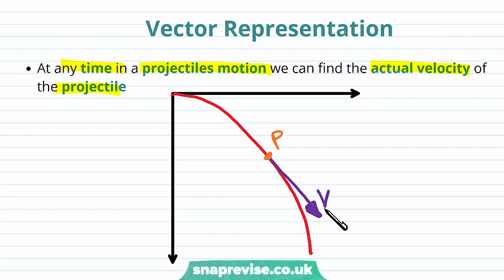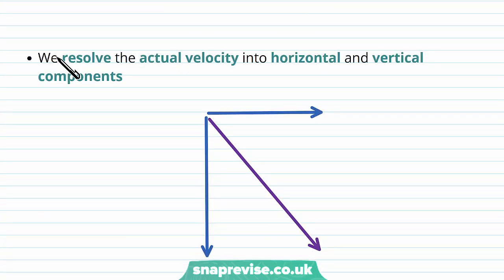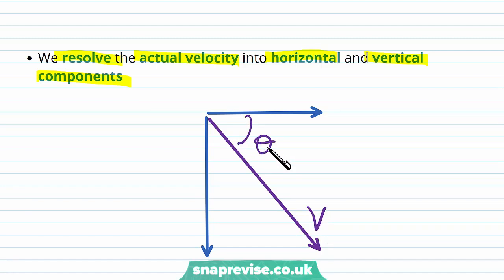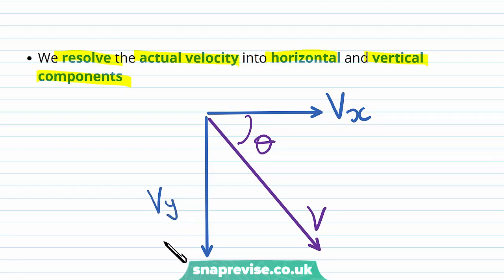So we have the overall velocity v acting at an angle theta below the horizontal. What we can do is resolve the actual velocity into horizontal and vertical components. So we've got our actual velocity v acting at an angle theta below the horizontal, and we can resolve it into a horizontal component vx and a vertical component vy.